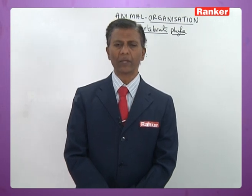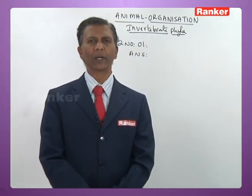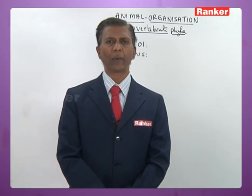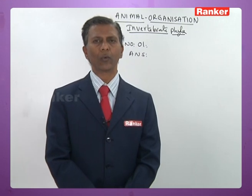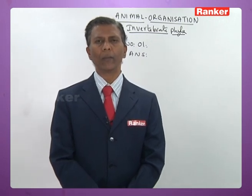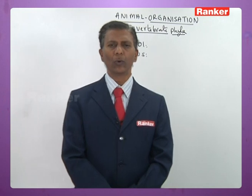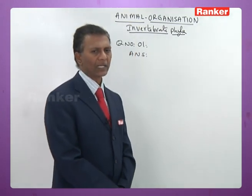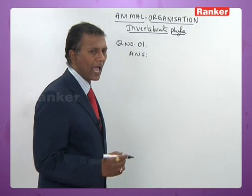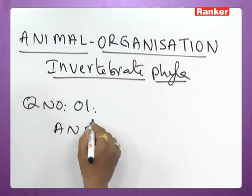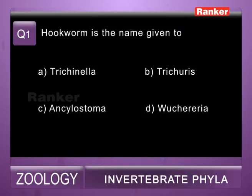So hookworm is the name given to Ankylostoma. There are two parasites: Ankylostoma duodenale is commonly called old world hookworm, and Necator americanus is commonly called new world hookworm. So for question number one, the correct answer is c) Ankylostoma.